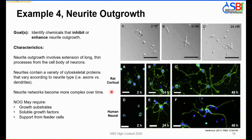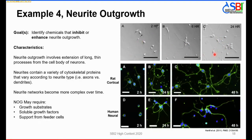The final example is a neurite outgrowth assay. The goal is to identify chemicals that inhibit or enhance neurite outgrowth. Shown on the right is a human-derived neuronal cell line at several snapshots up to 24 hours in vitro, showing the elaboration of long processes extending from the cell body. This process involves the extension of these thin processes containing various cytoskeletal proteins that vary according to the type of neurite — axons or dendrites. These neurite networks become more complex over time and can be visualized and measured using immunocytochemistry and high-content imaging.